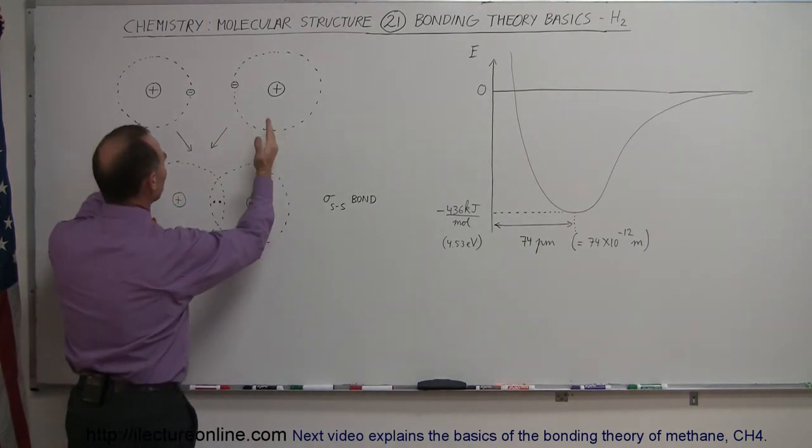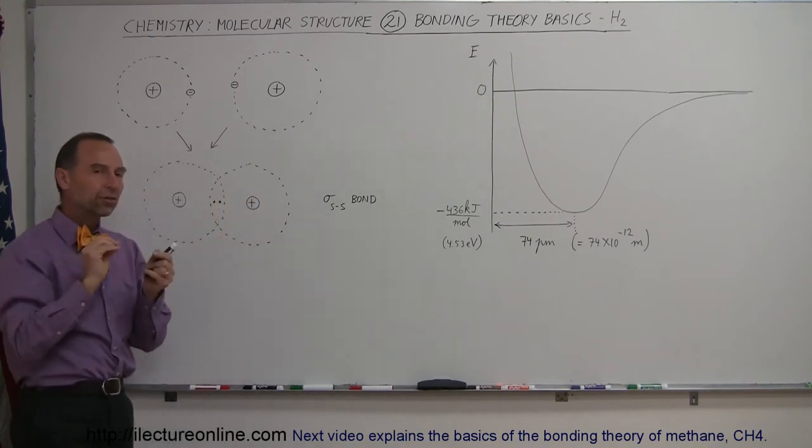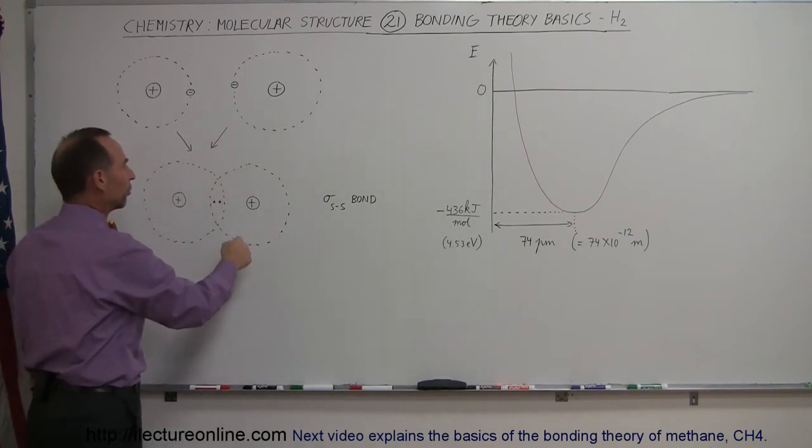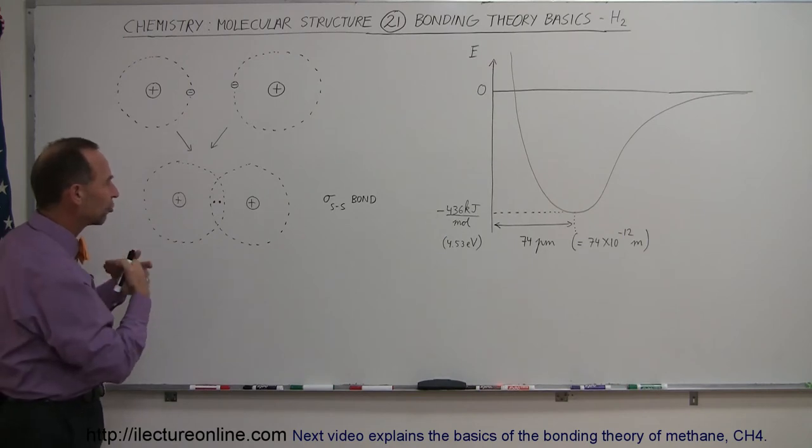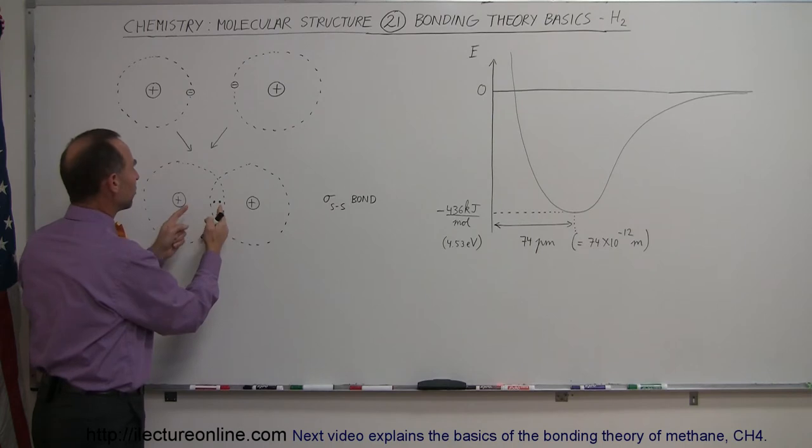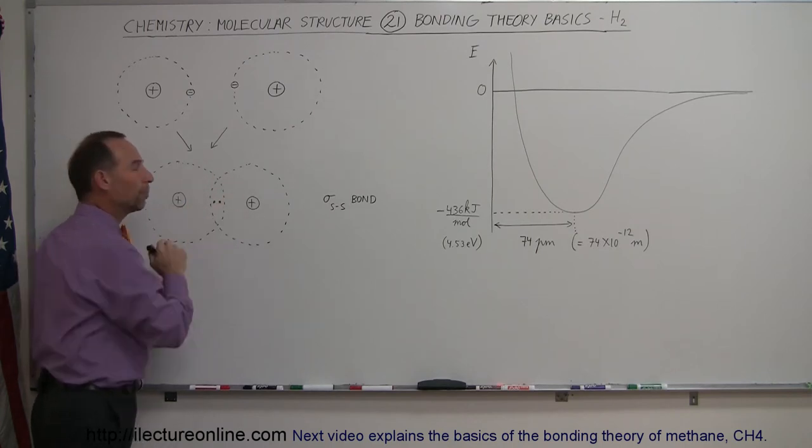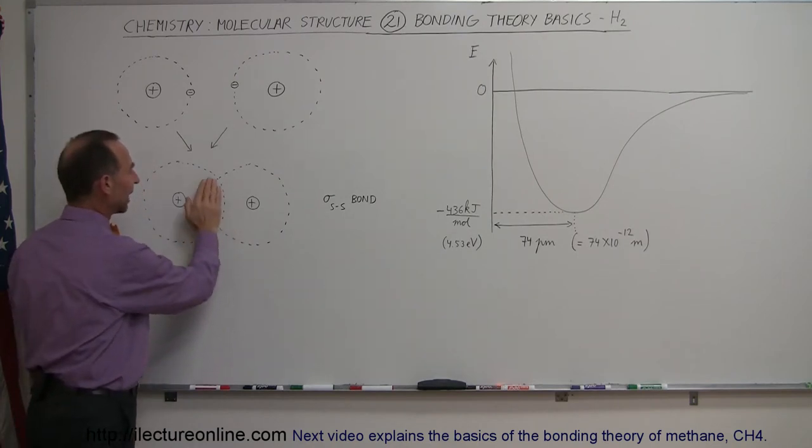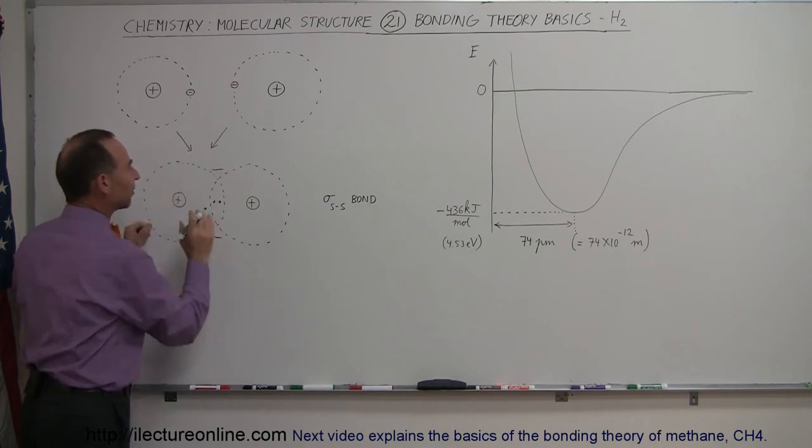So what happens when they get closer and closer together? What we find is that because there's only one electron in each of the two S orbitals, so in each of the S orbitals of each atom, they tend to have constructive interference with each other. So when they're in very close proximity to each other, they can actually occupy the same region between the two protons, which makes this a very electronegative region. So this becomes very negative in nature.